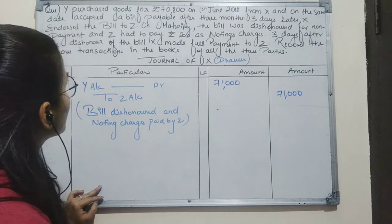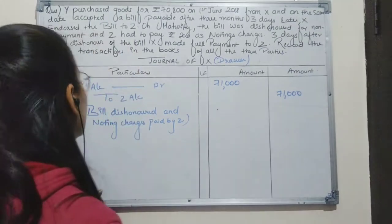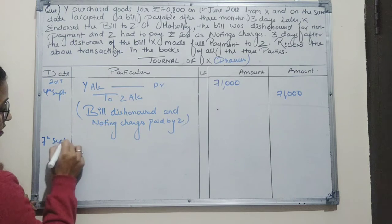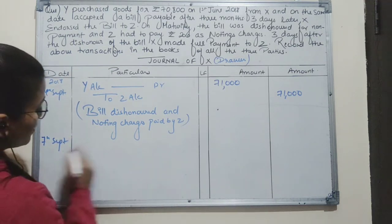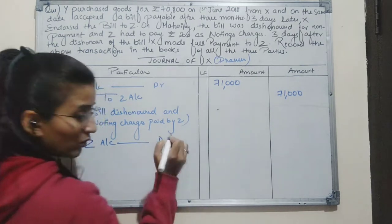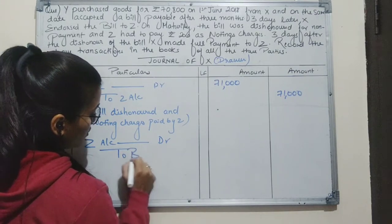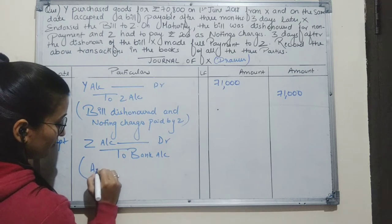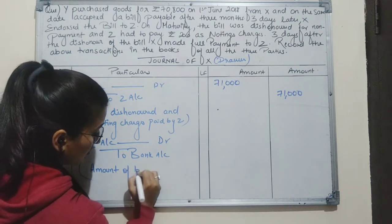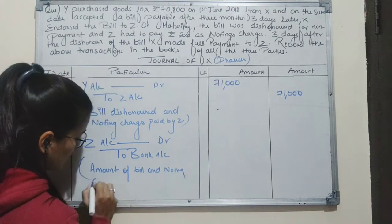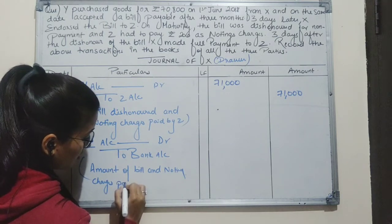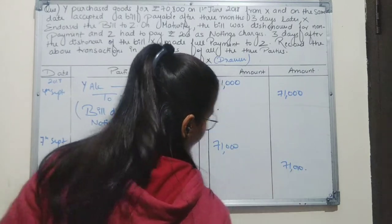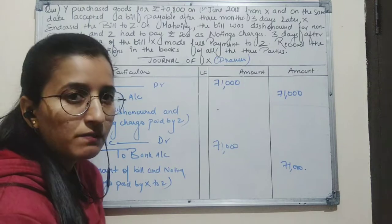Three days after the dishonor of the bill, X made full payment to Z. The date of maturity was 4th September; adding three more days gives 7th September. On 7th September, X made full payment to Z. Z will receive the amount of bill and noting charges. Entry: Z account debit to bank account, amount Rs. 71,000; narration: amount of bill and noting charges paid by X to Z. These are the entries passed in the books of the drawer X.